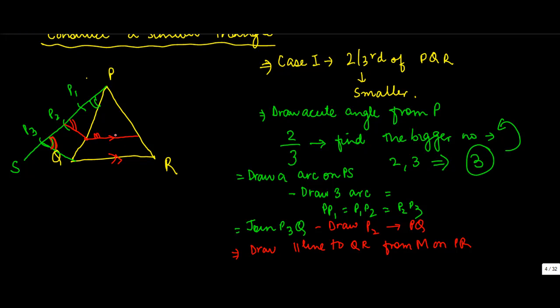You basically draw a line which is parallel to QR and it touches PR at let's say X. Then triangle PMX is equal to two-thirds of PQR, and it's also similar to triangle PQR. That's how you basically draw a similar triangle.